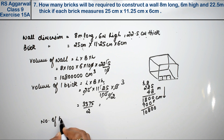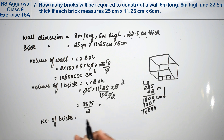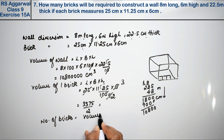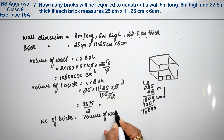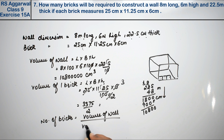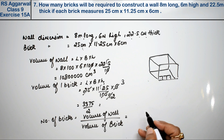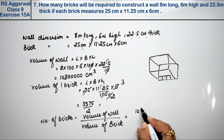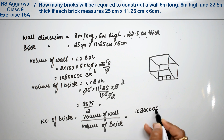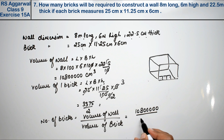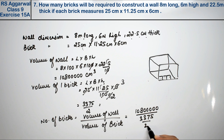Number of bricks equals volume of wall divided by volume of brick. Volume of wall is 10,800,000 cubic centimetres divided by volume of brick, which is 3375 divided by 2. So this becomes 10,800,000 into 2, divided by 3375.